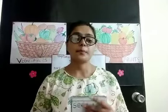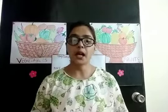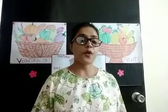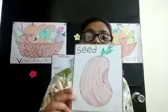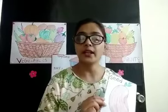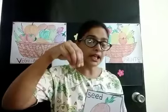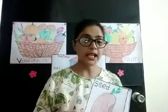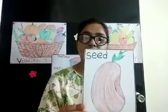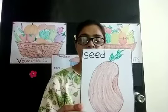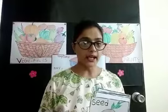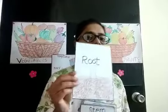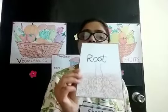We had learned parts of the plants. So children, first of all we will put the seeds in the soil. When we take a flower pot, we put soil in it, then we put the seed and then we pour some water in the pot. After the seed starts growing, we can see its roots.